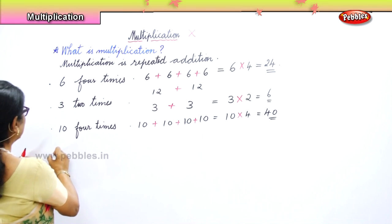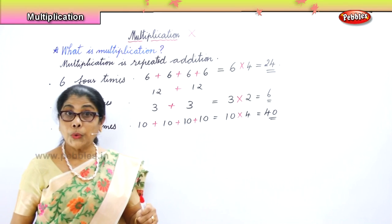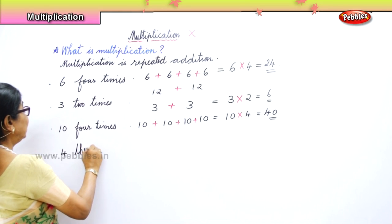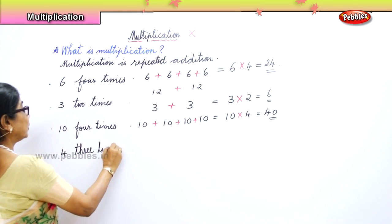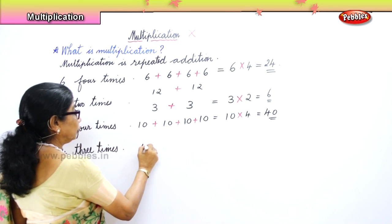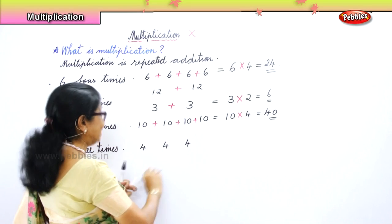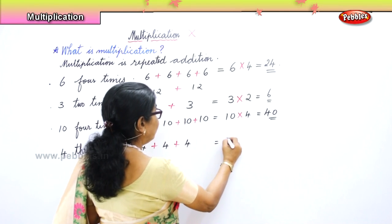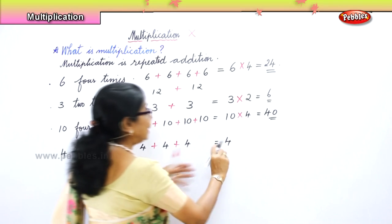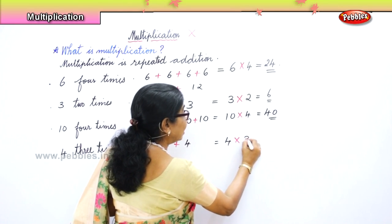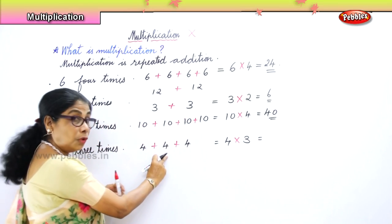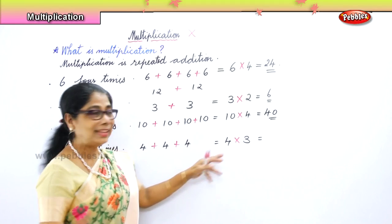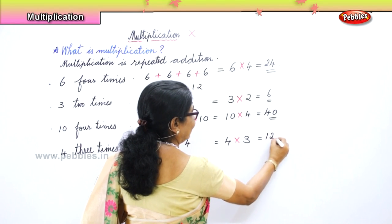Let's take another number: four, three times. Four three times is four plus four plus four. Four plus four is eight, eight plus four is twelve. Four threes are twelve.